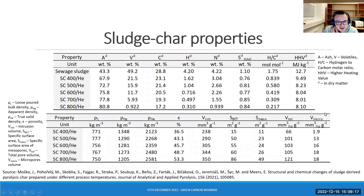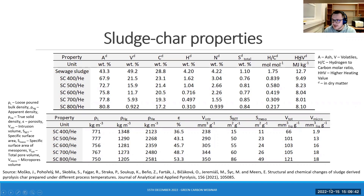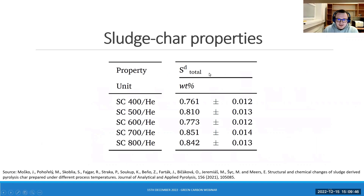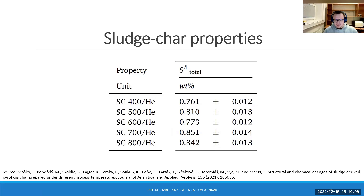Now let's move towards some sludge char properties. I will go through the two most interesting results we observed, and those would be the sulfur content and the heating value. Increasing the pyrolysis temperature, we would be expecting a decrease in sulfur content, which apparently did not happen — the content of sulfur in the sludge chars was relatively constant. Even making sulfur balances based on the temperature range, in all cases around 50% of sulfur remained in the sludge chars.